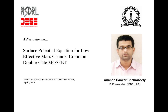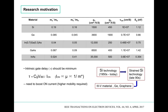We begin our discussion with the very reason behind research on low density of states materials. As we move ahead with time, we want to cater to the ever-increasing demand for higher speed of circuit operation within a limited power and area budget. From the intrinsic gate delay equation, if we can increase the on-current, we can achieve lower intrinsic gate delay and thereby higher speed.